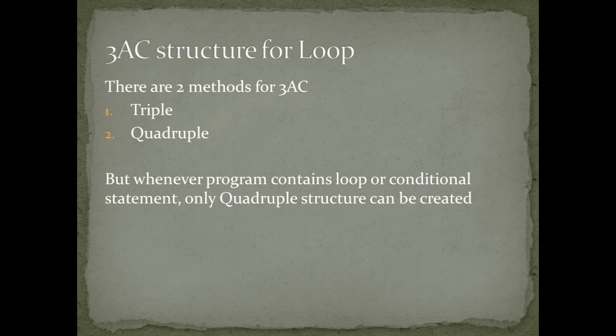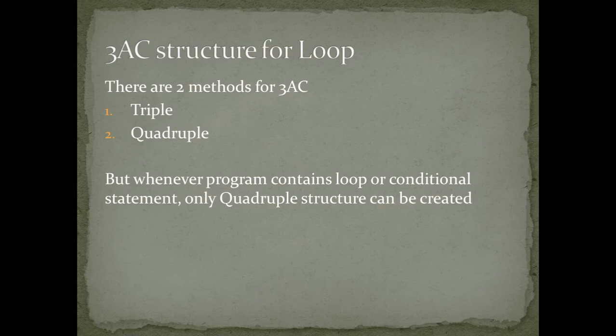Generally, there are two types of methods to write the 3AC structure: the first one is triple and the second is quadruple, which we already saw in earlier videos. But whenever a program contains any loop or conditional statements, it is not possible to construct a triple structure — only a quadruple structure can be created. Let's consider one example to see how it is created.